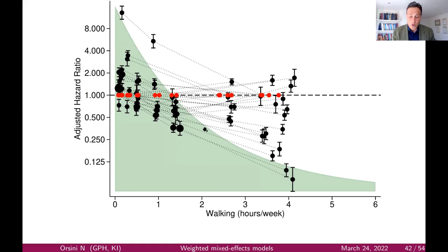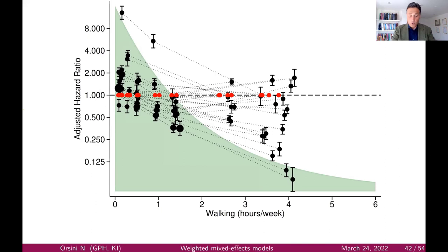Even if we appear very precise around two hours per week, there are no studies whatsoever around that point. The challenge of this way of defining uncertainty is that we are reasoning in terms of treatment effect — which is a distance measure.